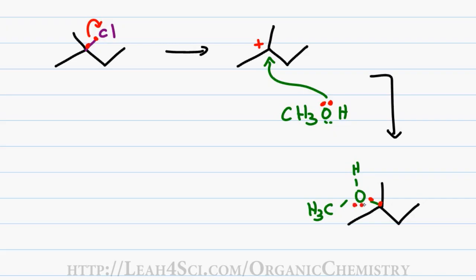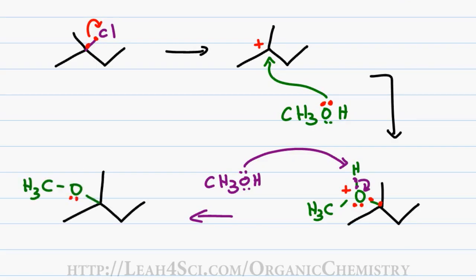This positive charge is removed when another solvent molecule will reach out with its lone pair of electrons, take away that extra hydrogen from our molecule, collapsing the electrons back onto oxygen. Oxygen is now neutral given that it has two bonds and two lone pairs of electrons.